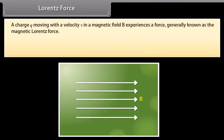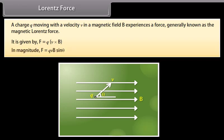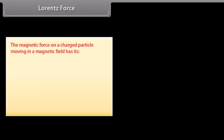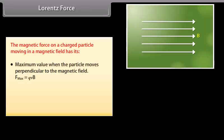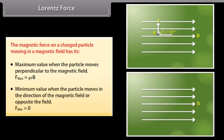A charge Q moving with a velocity V in a magnetic field B experiences a force generally known as the magnetic Lorentz force. It is given by F = Q(V × B). In magnitude, F = QVB sinθ. The magnetic force has its maximum value when the particle moves perpendicular to the magnetic field: F_max = QVB. The minimum value is when the particle moves in the direction of the magnetic field or opposite to it: F_min = 0.